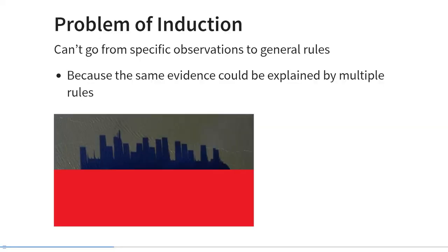An example of inductive reasoning: start with the premise that all of the swans I've ever observed have been white, and draw the conclusion that therefore all swans are white. The conclusion does not logically follow from the premise, because one counterexample could disconfirm it, and in this specific case the conclusion is indeed wrong. Here's another example of the problem of induction for visual learners. The problem holds that you can't go from specific observations to general rules, because the same evidence could be explained by multiple rules.